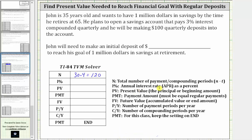I percent is the annual interest rate, which is 3%, and therefore I percent is 3. PV, our present value, is the initial deposit that John must make, and therefore we are solving for the present value. PMT stands for the payment amount; John is paying $100 quarterly, and therefore the payment is negative 100 — it's negative because he is paying this amount.